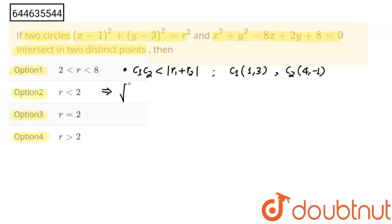4 minus 1, that is 3 square, that is 9, plus minus 1 minus 3, minus 4 square, 16.